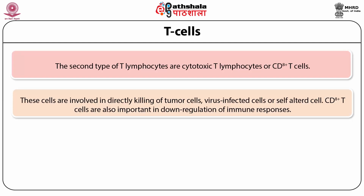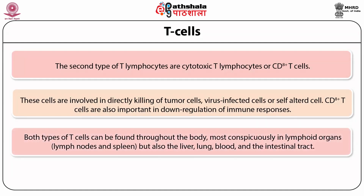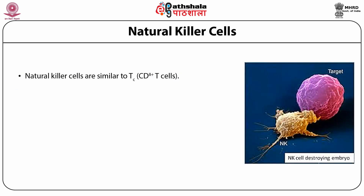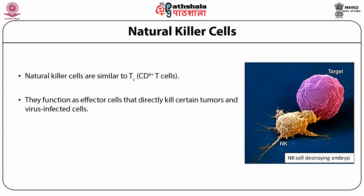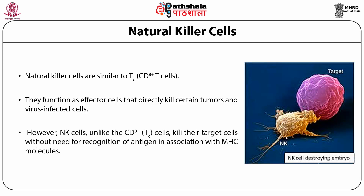CD8-positive T cells are also important in the down-regulation of immune responses. Both types of T cells can be found throughout the body, most conspicuously in lymphoid tissues, but also in the liver, lung, blood, and intestinal tract. Natural killer cells are similar to CD8-positive TC cells. They function as effector cells that directly kill certain tumors or virally infected cells. However, NK cells, unlike CD8-positive cells, kill their target cells without need for recognition of antigen in association with MHC molecules.